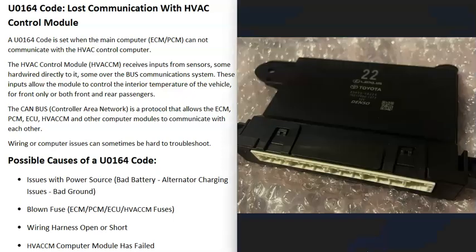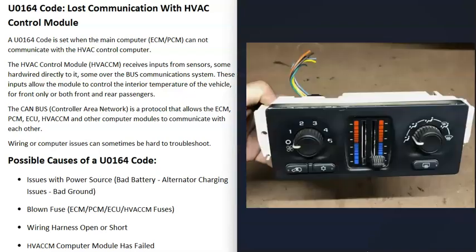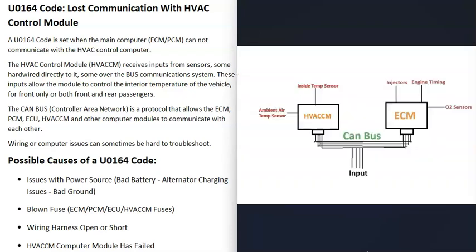Many vehicles nowadays have a computer controlling the heating and cooling system inside the vehicle. It receives inputs from different sensors and automatically controls heating and cooling — sometimes just the front seats, sometimes front and back. Modern vehicles have different control modules doing different things: an engine control module, powertrain control module, transmission control module, ABS control module, and of course the HVAC control module. Each computer gets information from different sensors and controls one specific thing — for example, the engine control module handles injectors, engine timing, and O2 sensors, while the HVAC control module just controls heating and cooling.